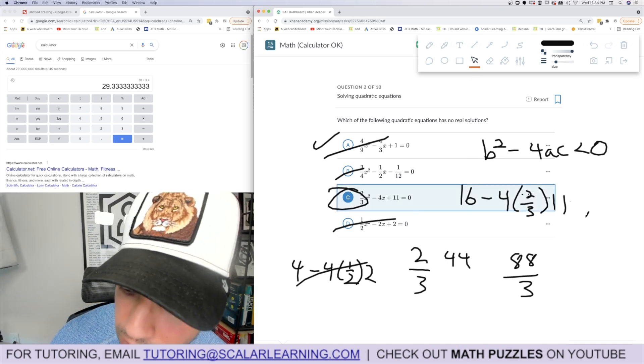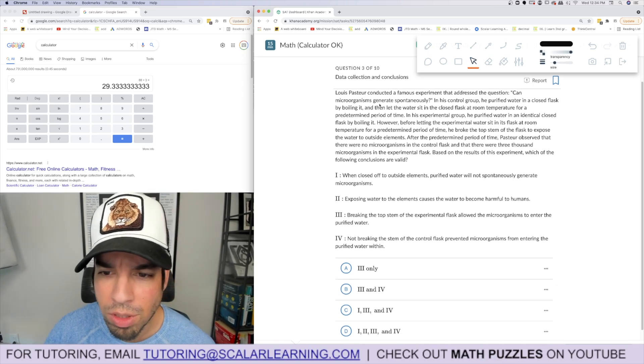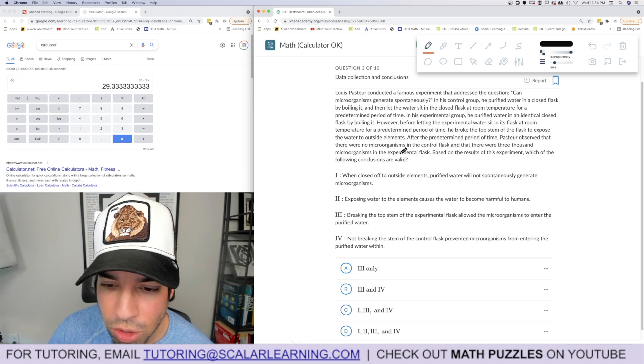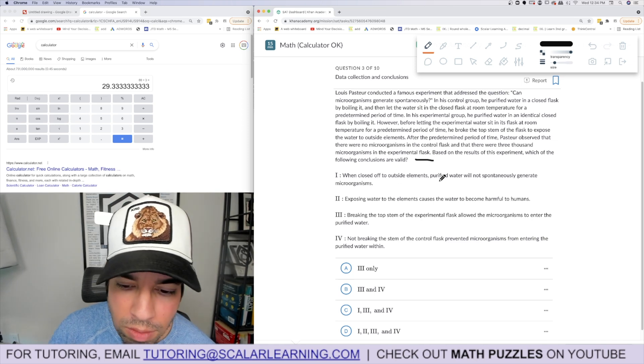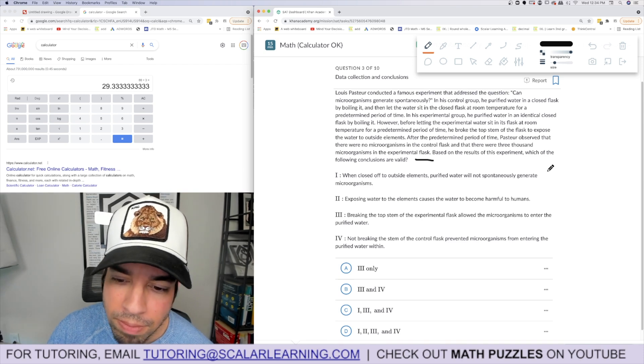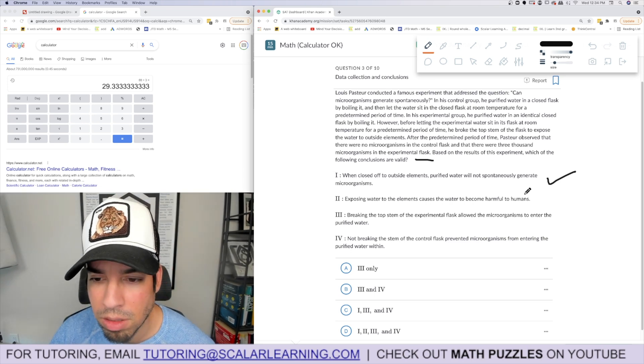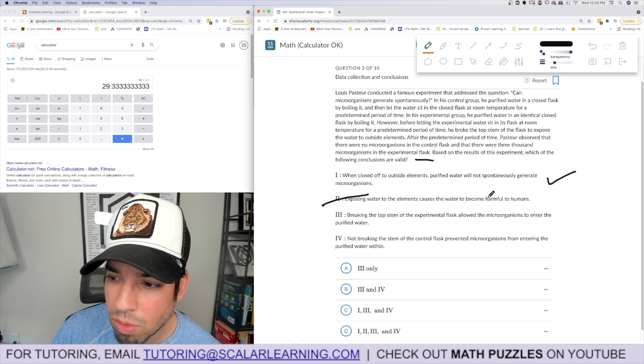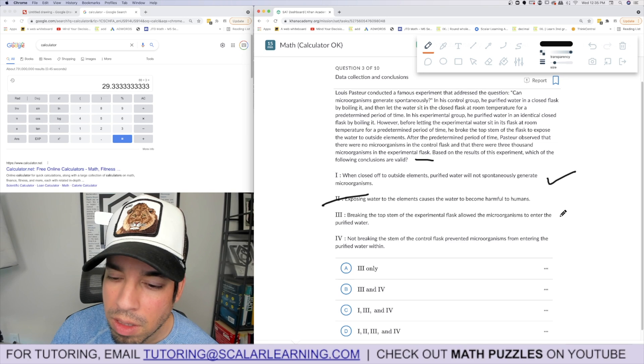Oh god, I hate these questions. Louis Pasteur conducted a famous experiment. I've done this one before. He boiled it, then sat it in the flask, then he broke it. After a predetermined time, Pasteur observed that there were no microorganisms in the control flask and 3,000 microorganisms in the experimental flask. When closed off to outside elements, purified water will not spontaneously generate microorganisms. He says nothing about being harmful.